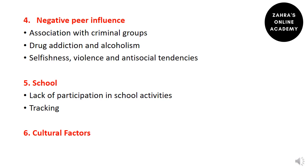Another factor responsible for juvenile delinquency is negative peer influence. Children closely associate with their peers and copy their style, tastes, ambitions, and behavior. If their peers are involved in negative activities, the child will copy them. Peers associated with criminal groups or drug addiction, or peers displaying violence, play a major role in inclining a child toward delinquent behavior.